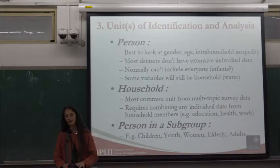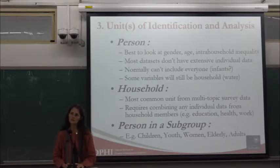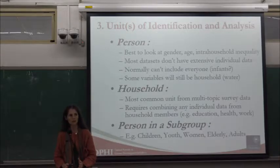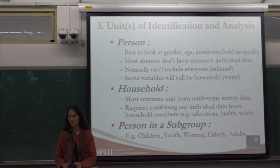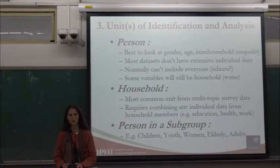You can also look at age-specific characteristics of poverty. We decompose the global MPI by age, but it uses the same definition for different age groups, whereas you may want to know specifically which age groups are poorer. If you have data on different household members, you can examine intra-household inequality: are women poorer than men, children poorer than their families? Mexico's official multidimensional poverty measure takes the person as the unit of identification and can therefore report that women are poorer than men.